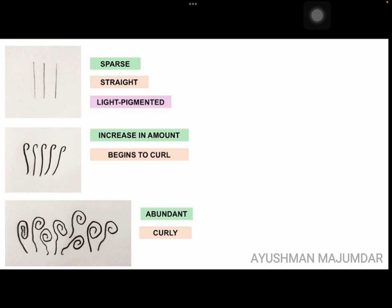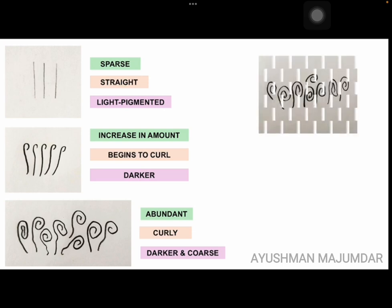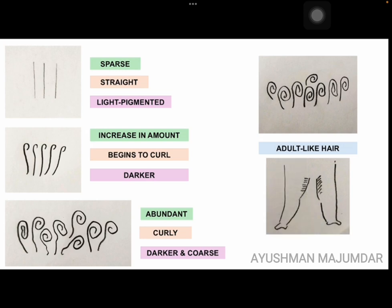In stage 2, the hairs are very lightly pigmented. In stage 3, they are darker. And in stage 4, they are both darker and coarse. Finally, in stage 5, we have got adult-like hair, and this adult-like hair is present mainly on the medial aspect of the thigh as well.